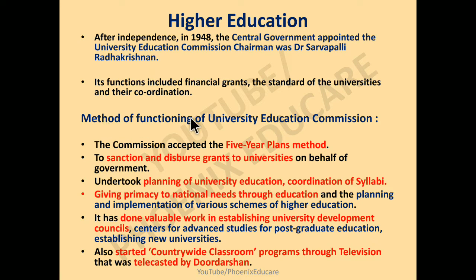Then the method for functioning of the University Education Commission. The first method was the Commission appointed for a 5-year plan. So they started planning for 5-5 years — what development will be done in education after 5 years. A good plan was made ready and implementation started.